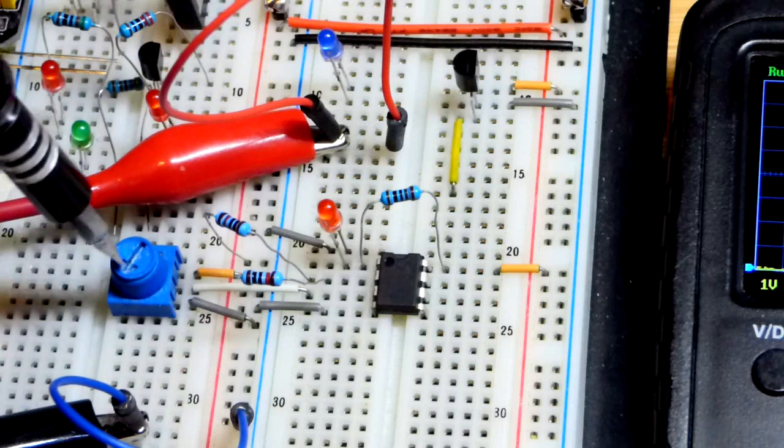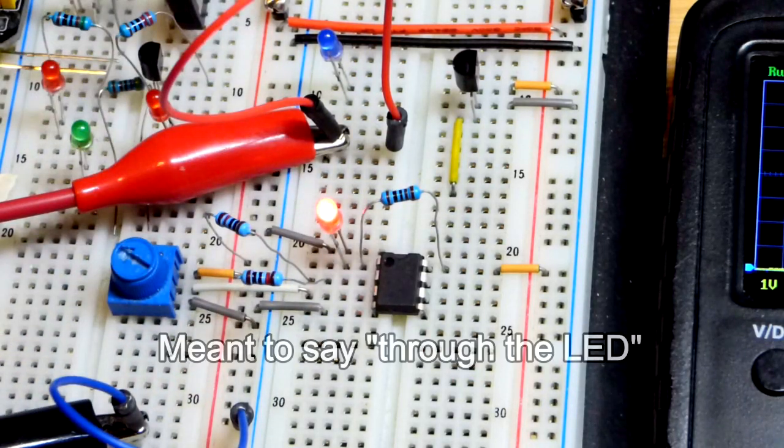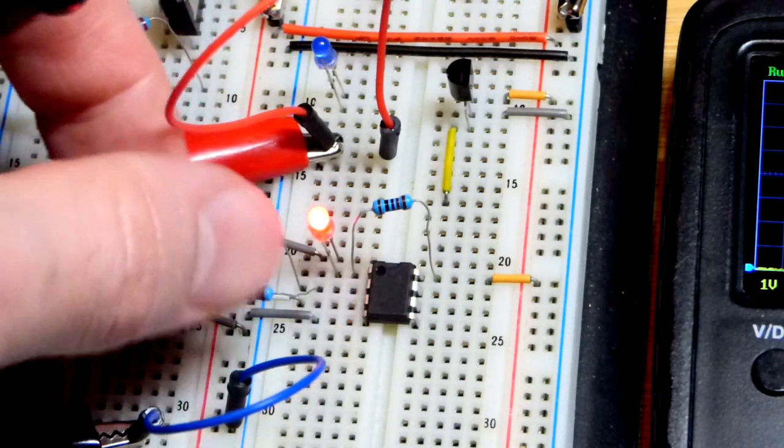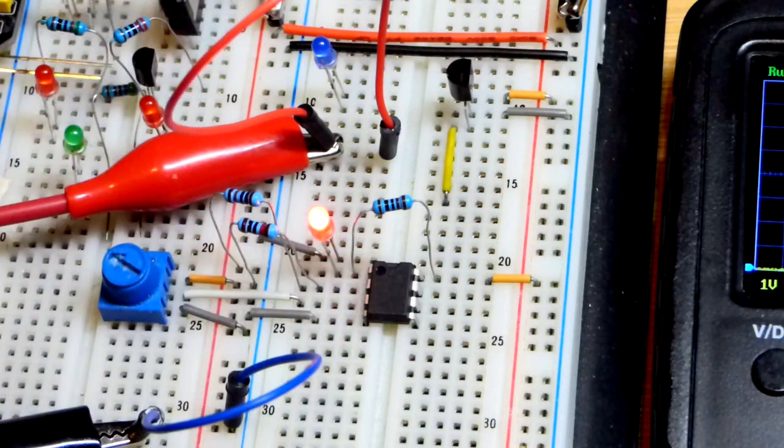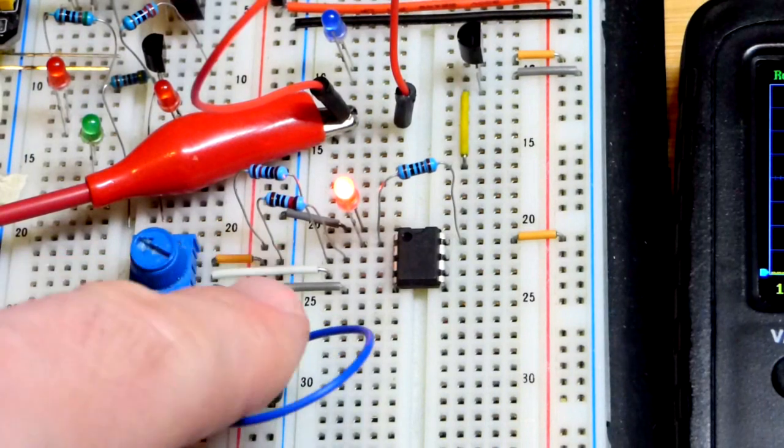And if I turn the trim pot up, now it's going through the resistor. Trim pot to the non-inverting input. These two resistors here, one to the positive supply, one to the negative. And they both come to the inverting input right there. And of course, we have to power it.